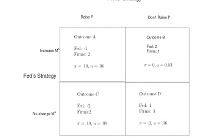This is a one-time game between two players: firms and the Federal Reserve. Firms can either raise prices or leave prices the same. The Federal Reserve can either increase the money supply or leave it the same. That gives four possible outcomes: A, B, C, and D. In outcome A, firms raise prices and the Fed increases the money supply — inflation is 10%, unemployment is 6%. In outcome B, the Fed increases money supply but firms keep prices the same — inflation 0%, unemployment 3%.